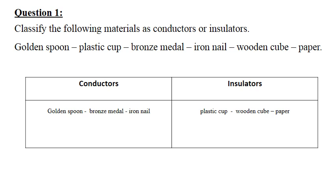Second one: a plastic cup — insulator. Bronze medal: bronze is a metal, so it's a conductor. Iron nail: conductor. Wooden cup: insulator. Paper: insulator. Remember — if it's a metal like gold, copper, aluminum, iron, or silver, it's a conductor; if it's not a metal, it's an insulator.